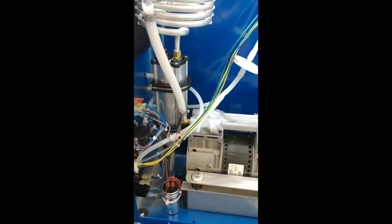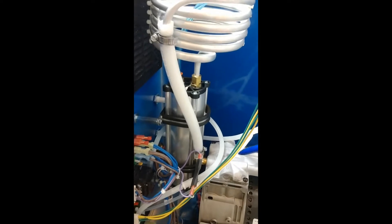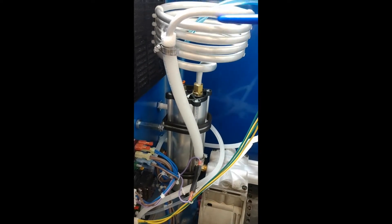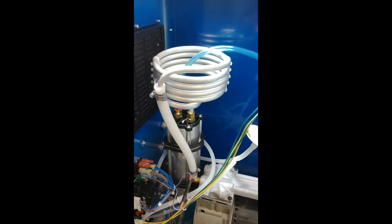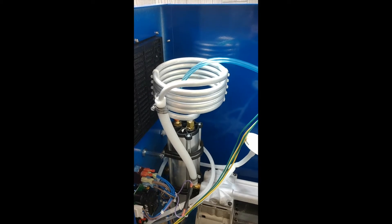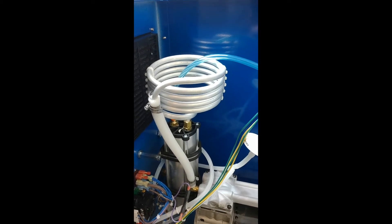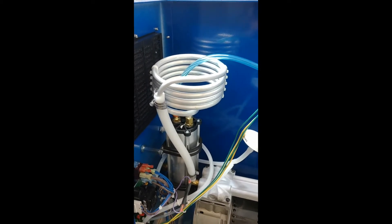This hot compressed air goes up this white hose here into the coil of aluminum tube to cool it down. When you cool that air down, a lot of the moisture that's in the air will condense out of it.